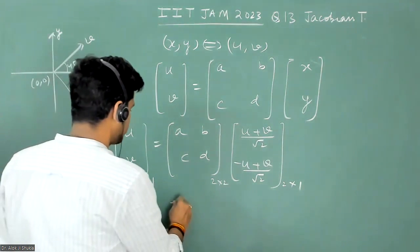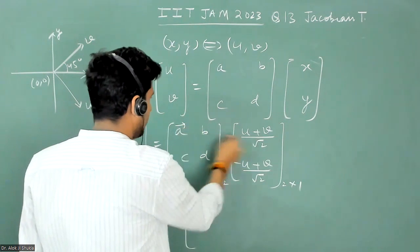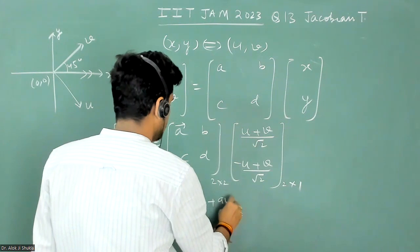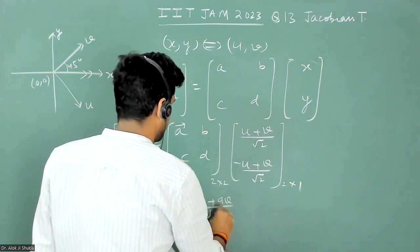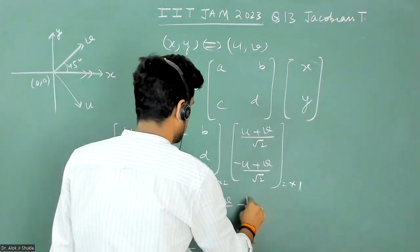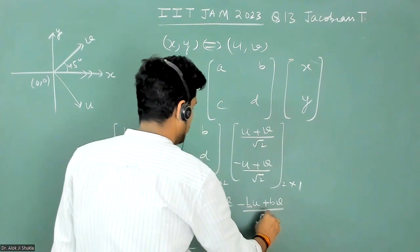So now just multiply them. So it will become multiplied by a first. So it will become au plus av by under root two. And then minus bu plus bv by under root two.